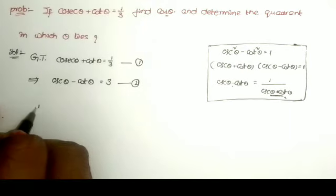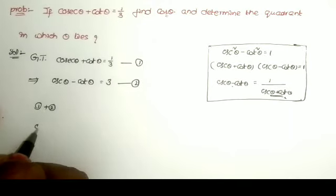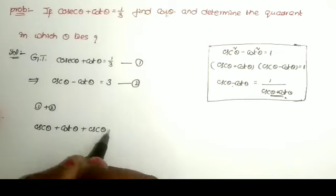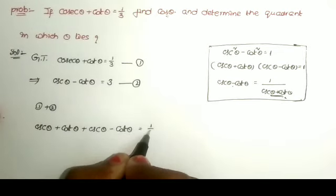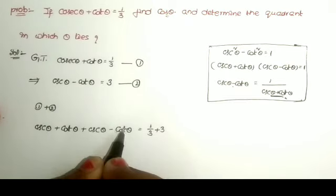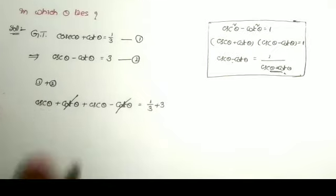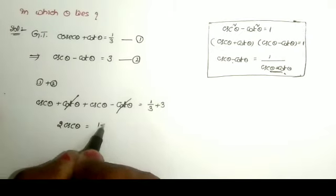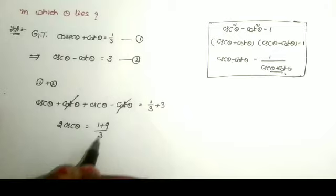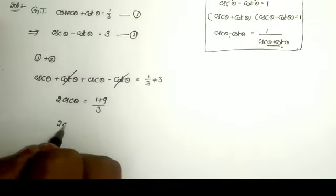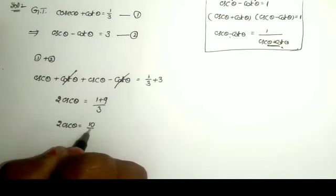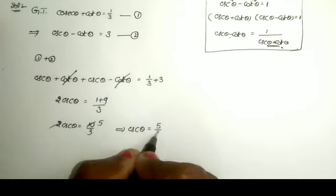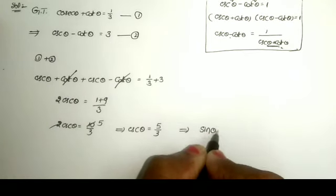Now adding the two equations (equation 1 plus equation 2): cosecant theta plus cot theta plus cosecant theta minus cot theta. Here cot theta minus cot theta gets cancelled, giving 2 cosecant theta. Taking the LCM on the right side: 1/3 plus 3 equals 10/3. So 2 cosecant theta equals 10 by 3, which implies cosecant theta equals 5 by 3, and therefore sine theta equals 3 by 5.